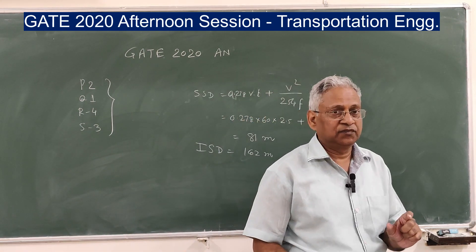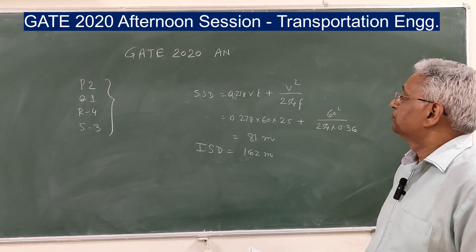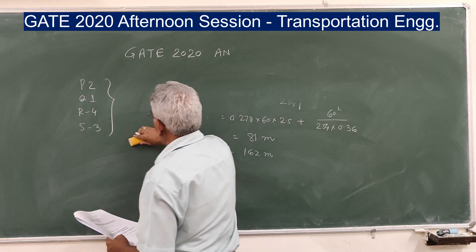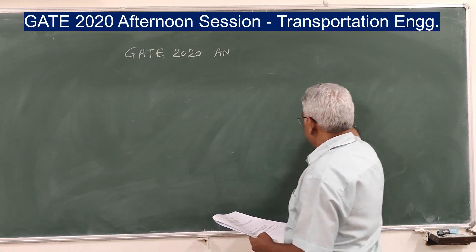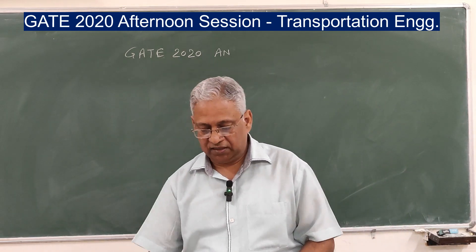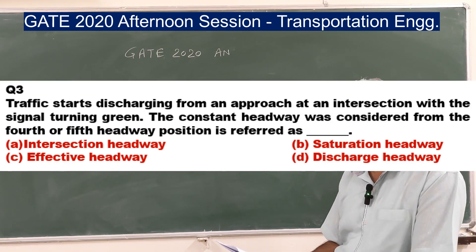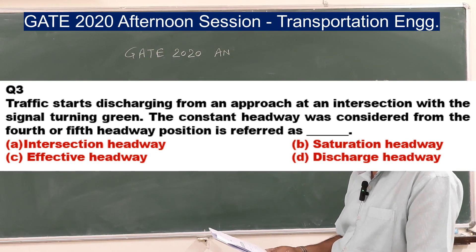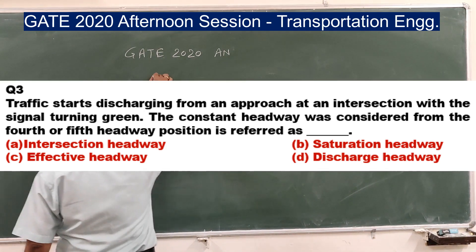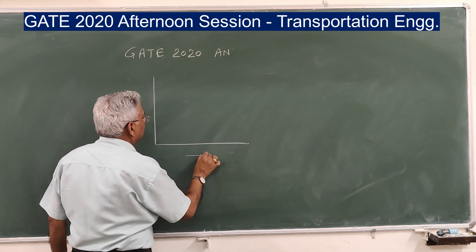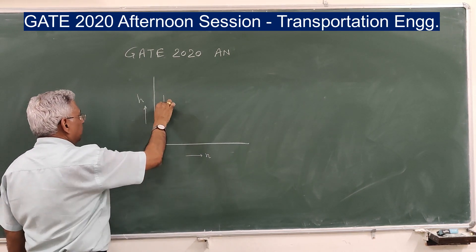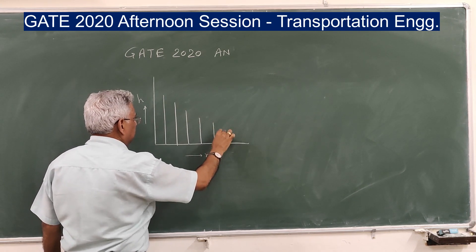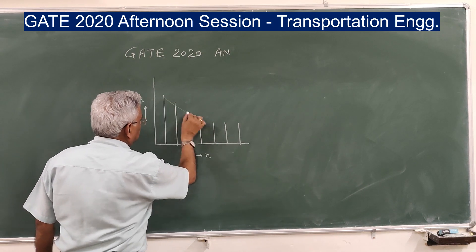Question number three is also straightforward if you know how traffic flow is discharged at a stop line. The question reads: traffic starts discharging from an approach at an intersection when the signal turns green. The constant headway considered from the fourth or fifth headway position — what is this referred to? For the first four or five vehicles, headway is larger because of starting delay, and then it becomes constant.